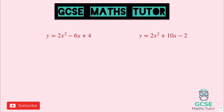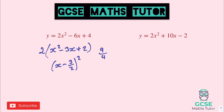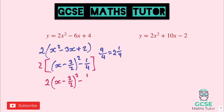Let's look at the answers to the two harder practice questions. First one: taking two out gives 2(x² − 3x + 2). Completing the square inside: (x − 3/2)². That gives nine-quarters, which is two and a quarter. We want two, so we subtract a quarter. Bringing the two back in: 2(x − 3/2)² minus two times a quarter, which is negative one-half. Coordinates of the turning point: x = 3/2, y = −1/2.